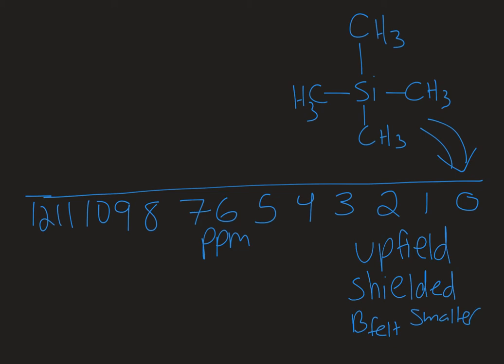As you move to the other side, the left-hand side where we have the bigger numbers, this is described as downfield, and these protons would be called deshielded. The neighbors are influencing it in such a way that B felt is larger. So those nuclei experience a larger magnetic field and therefore have a larger chemical shift.